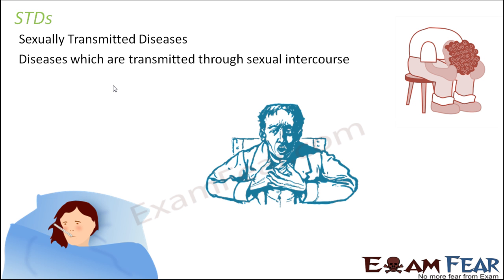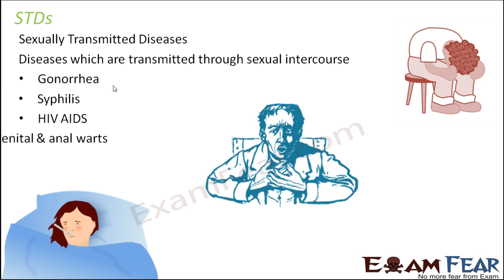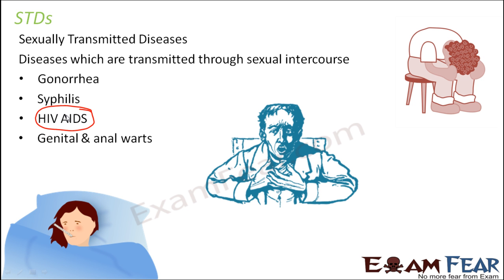Examples of sexually transmitted diseases are gonorrhea, syphilis, HIV AIDS, and genital and anal warts. These are some of the examples of sexually transmitted diseases, among which HIV is one of the most dangerous. However, many of these diseases, if diagnosed very early, can be completely cured if proper treatment is taken.